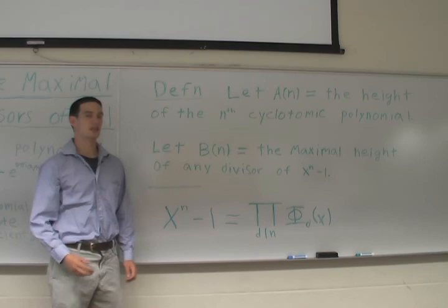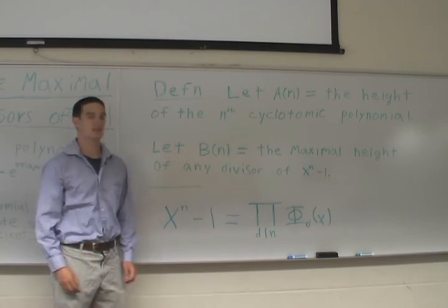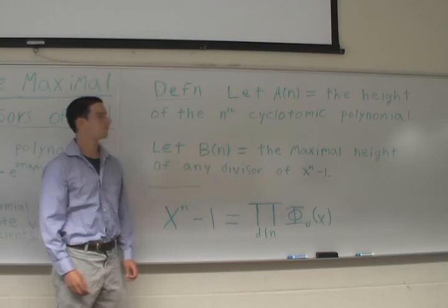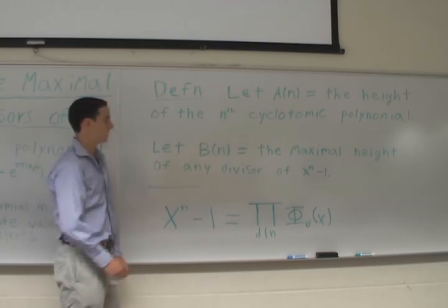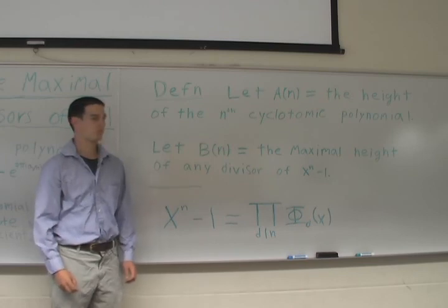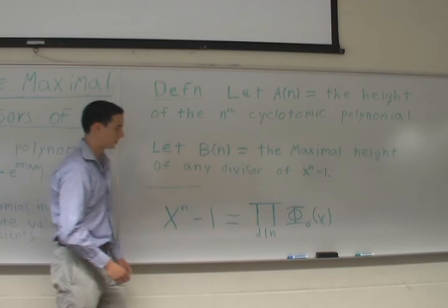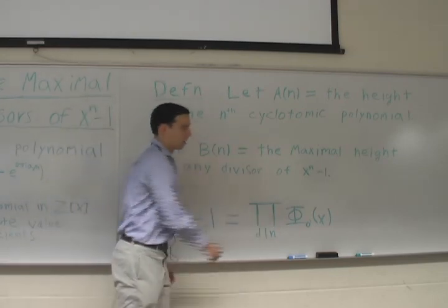In this paper, we don't study a of n, but a variation which was recently introduced in a 2007 paper of Pomerantz and Ryan. Let b of n be equal to the maximum height of any divisor of x to the n minus 1. It is easy to see that x to the n minus 1 factors as a product of cyclotomic polynomials.